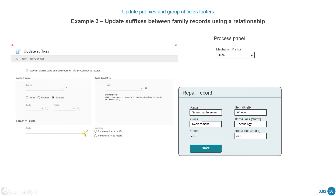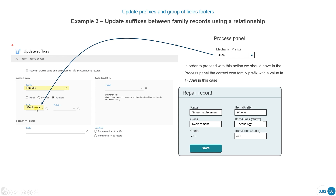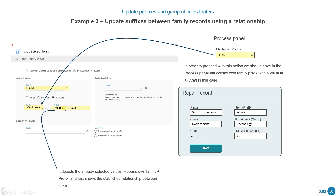When configuring this system task, we select between family records, select the family to update, select relation, and then select a prefix. To proceed, we need the correct own-family prefix with a value in the process panel — for example, a mechanic value. Based on that mechanic prefix value and the repairs family, the system offers all relations between repairs and mechanics so we can select one. Then we select the result field and the prefix field inside the record, and specify the direction: from the record to the suffix or from the suffix to the record.